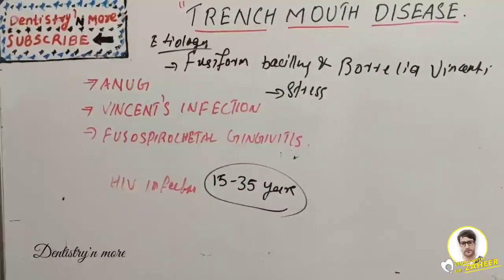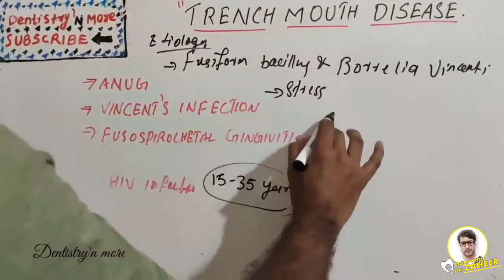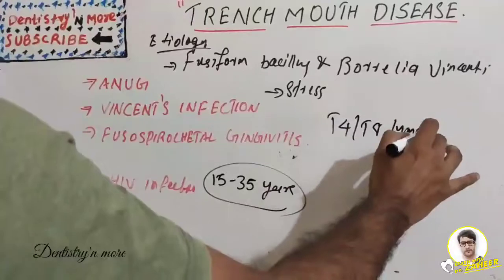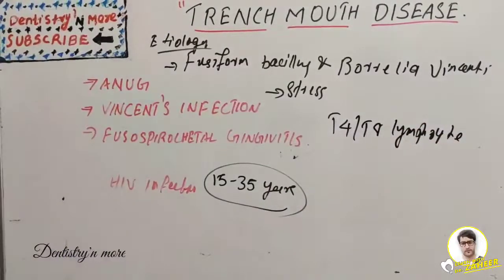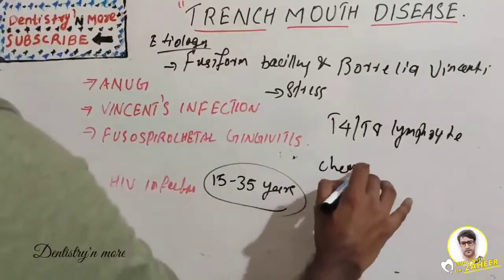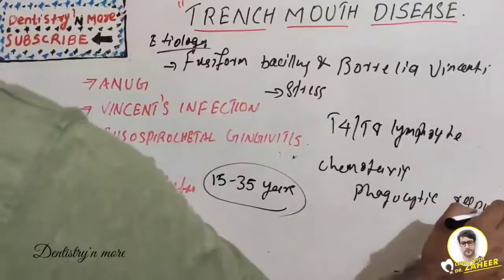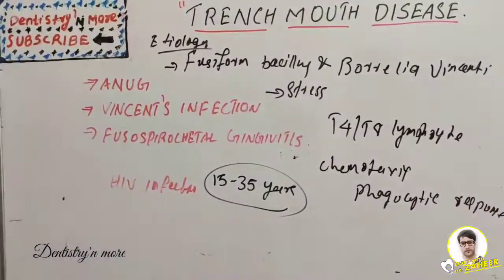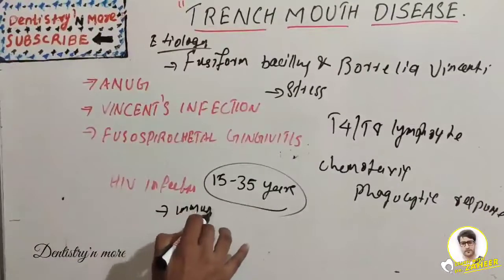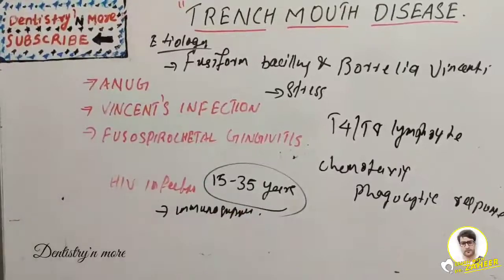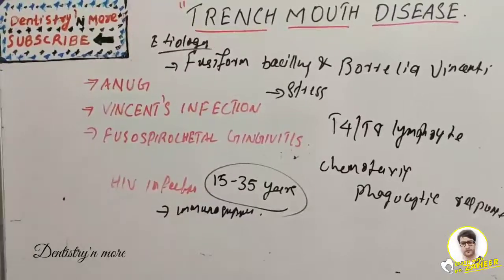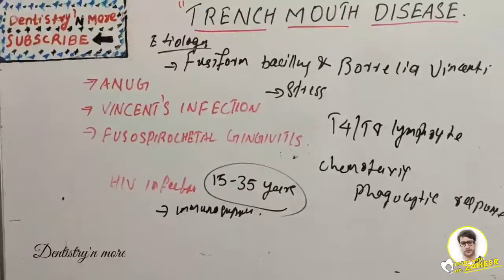Stress-related corticosteroids are thought to alter the T4 and T8 lymphocyte ratio and may cause decreased neutrophilic chemotaxis and phagocytic response. It can also be seen in people with immunosuppression, smoking, local trauma, poor nutritional status, poor oral hygiene, inadequate sleep, or debilitating diseases such as infectious mononucleosis, diabetes, or Down syndrome.